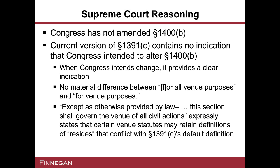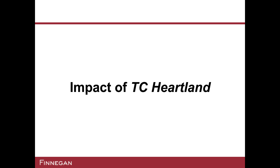The last point the Supreme Court made was that there was no indication that Congress, in amending 1391C in 2011, had somehow ratified the Federal Circuit's decision in V.E. Holdings, which is what the Federal Circuit had been relying on. Based on these four main points, the Supreme Court held that venue in a patent infringement case for a domestic corporation lies in the state of incorporation. Now we will switch gears and talk about the impact of this decision.